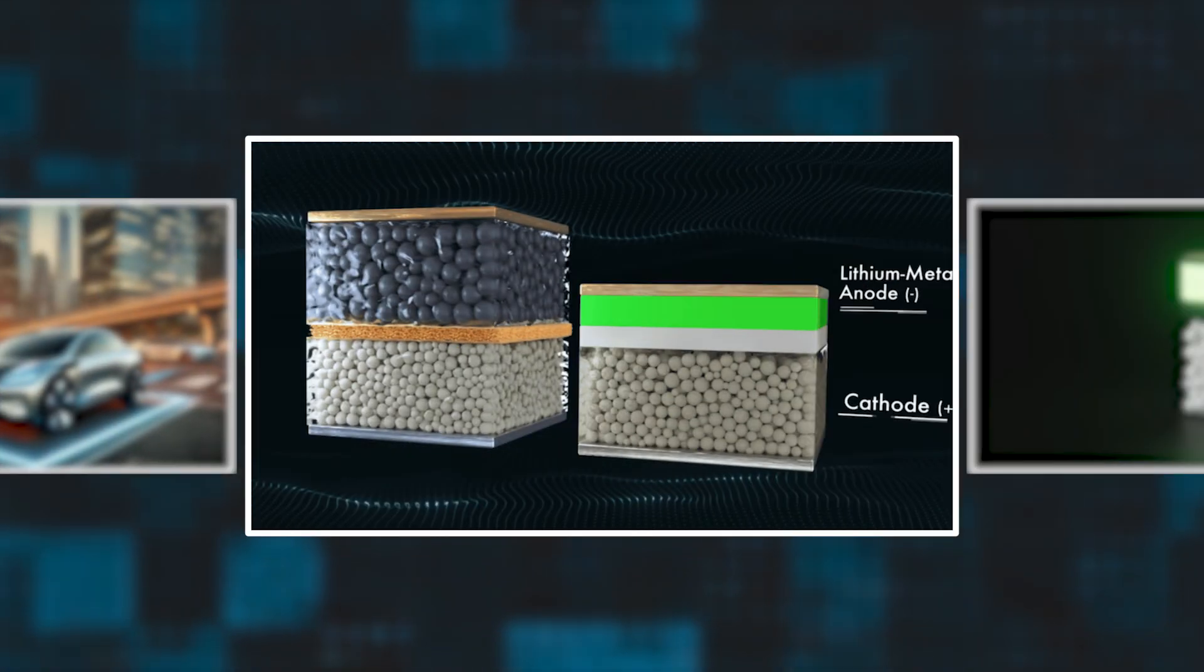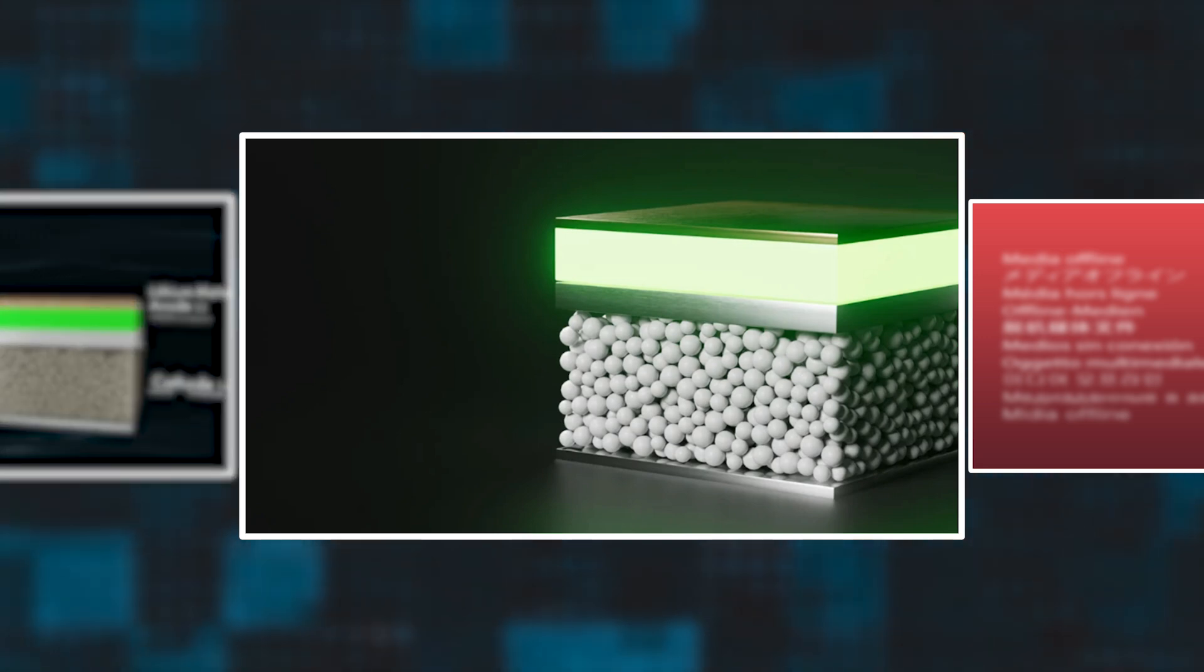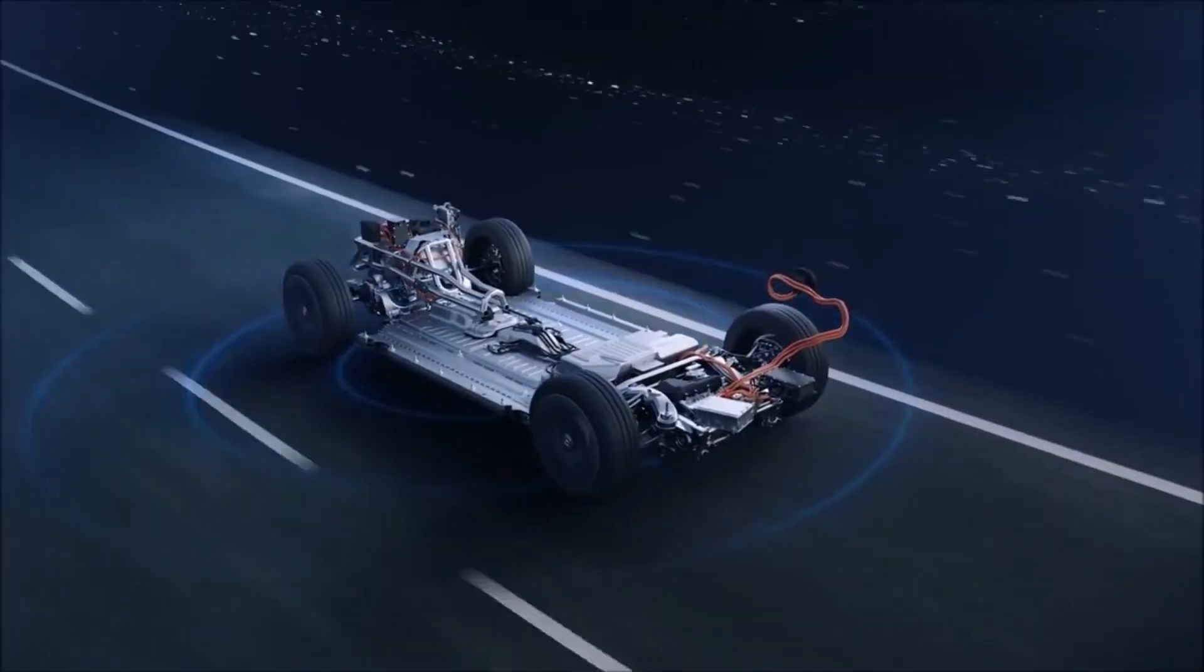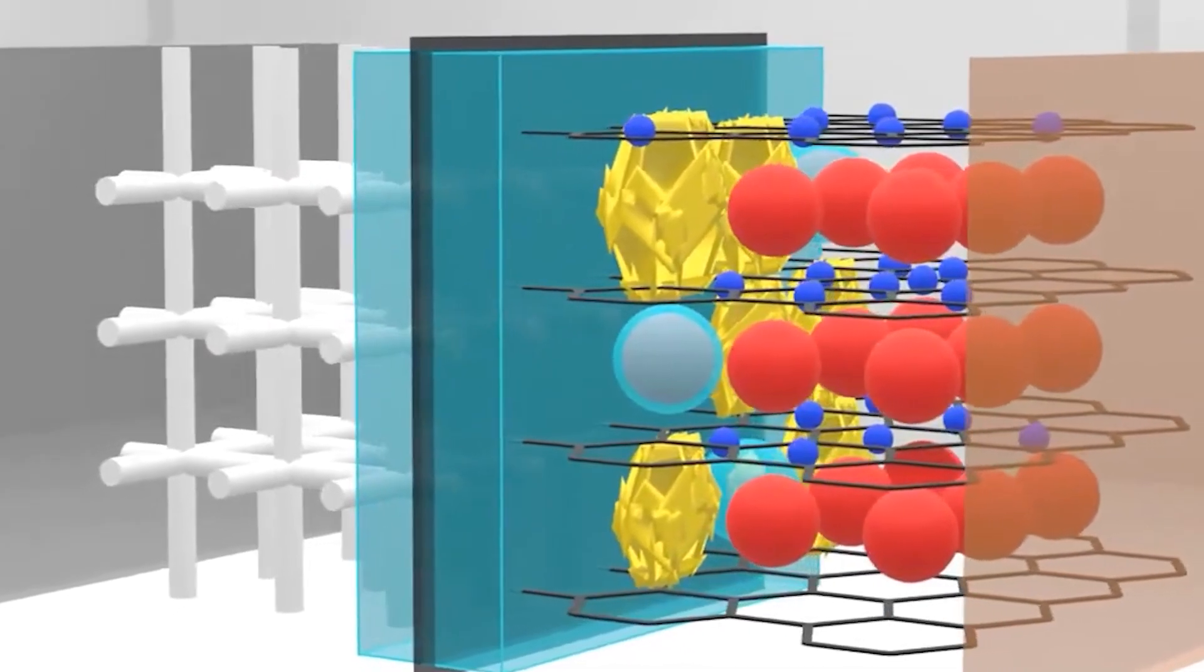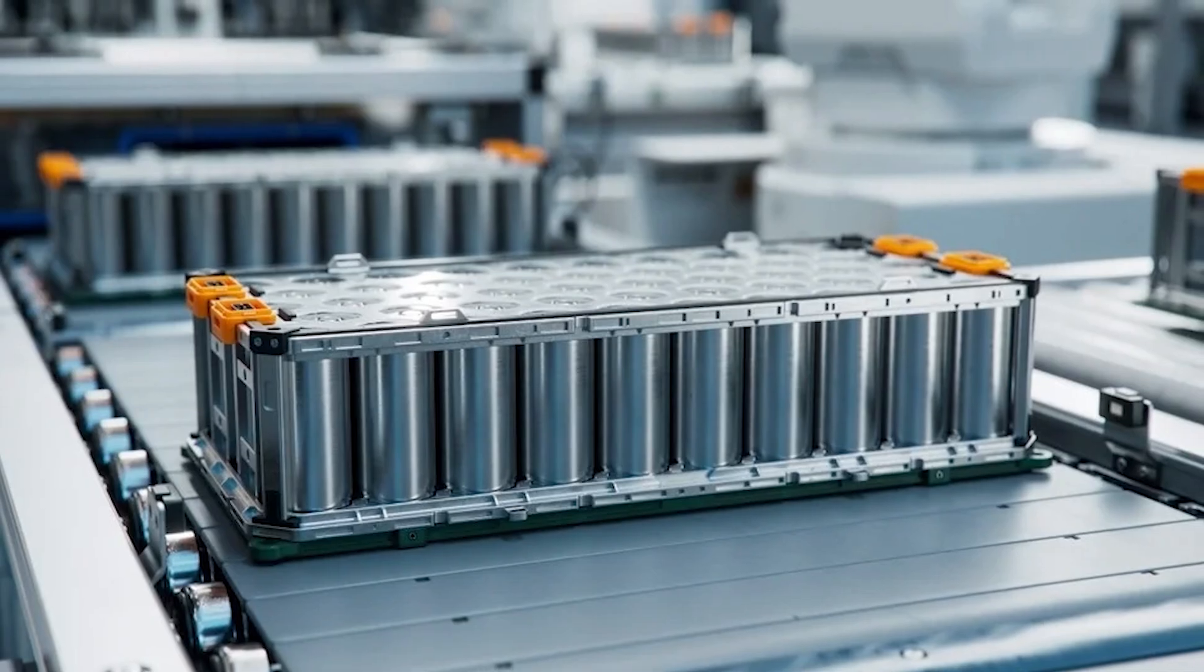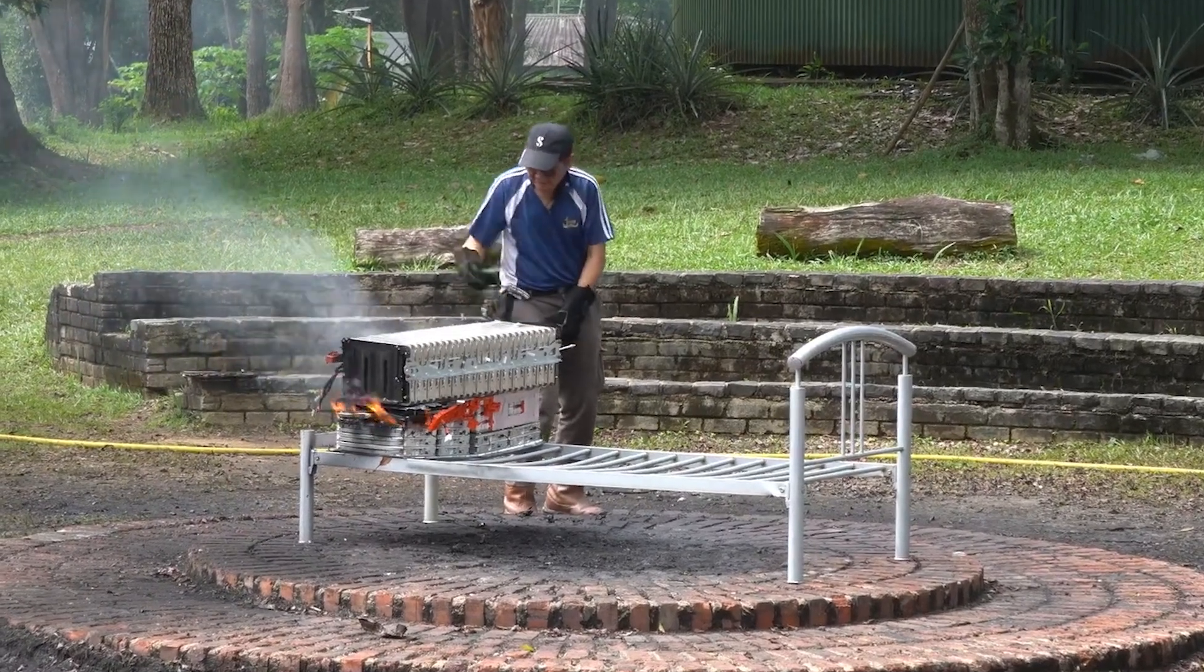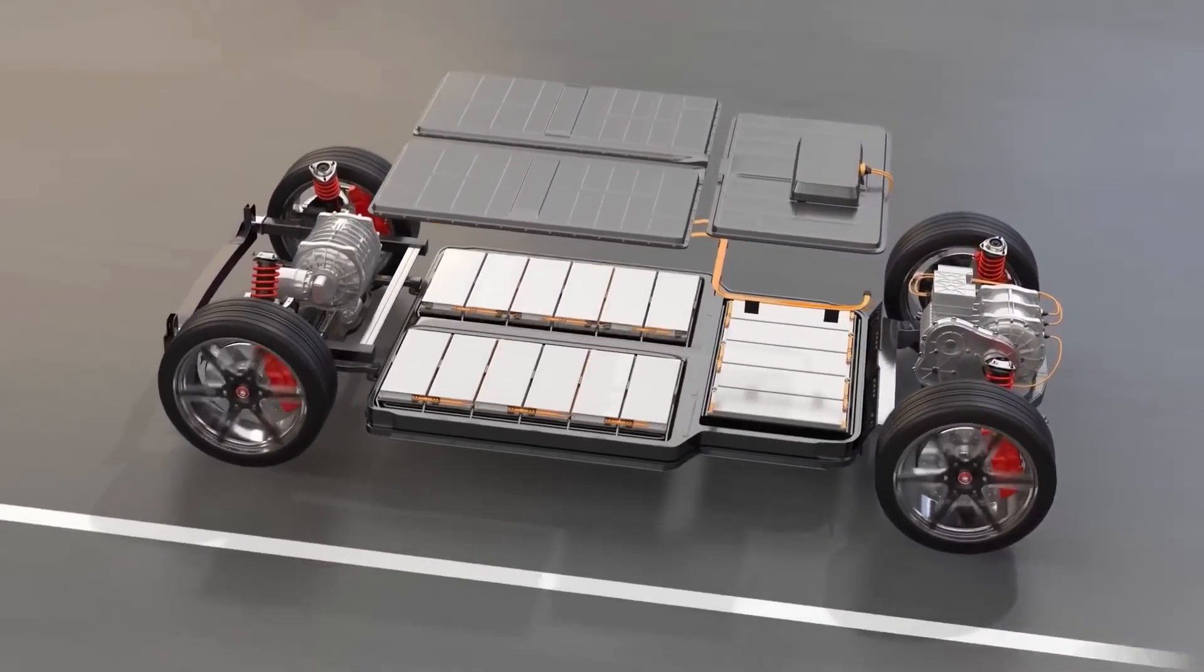But there's more. These solid-state batteries also use a lithium-metal anode instead of the graphite anode found in most lithium-ion batteries. Why does this matter? Because lithium-metal anodes can store far more energy, making the battery even more powerful. By combining a solid ceramic electrolyte with a lithium-metal anode, Samsung has created a battery that is more energy-dense, safer with no risk of fires, more durable, and faster to charge.